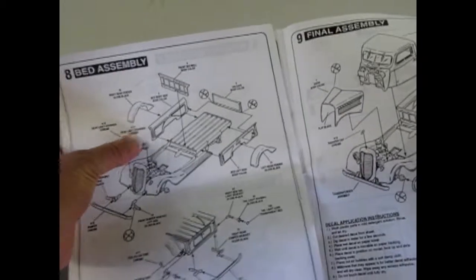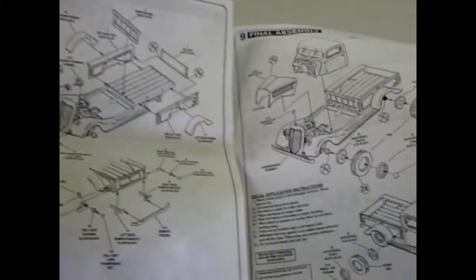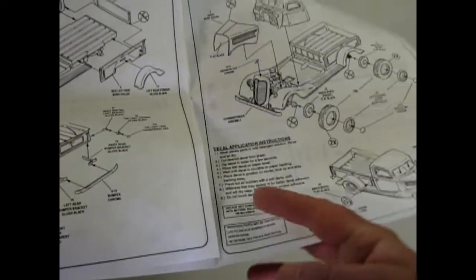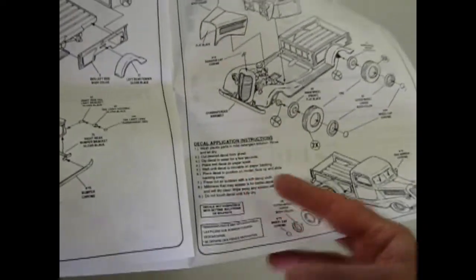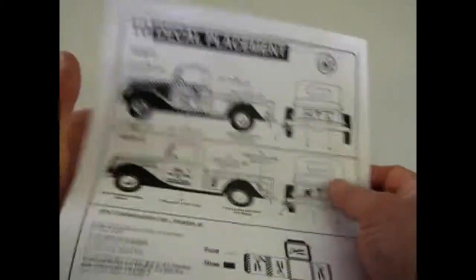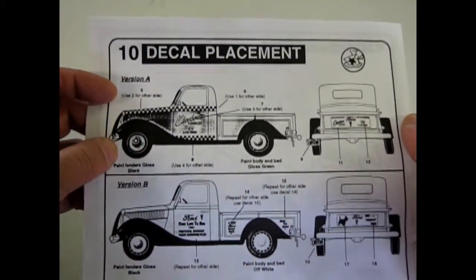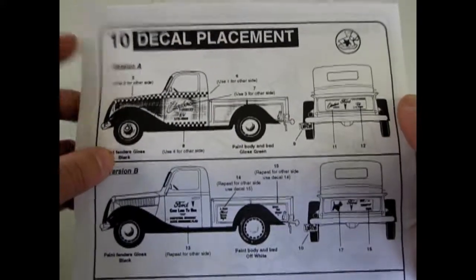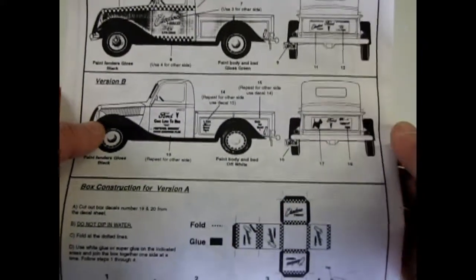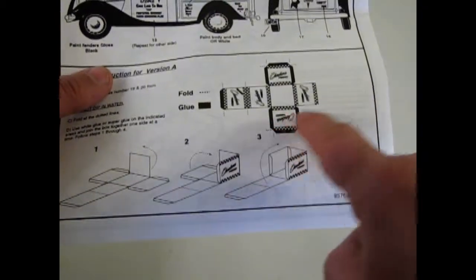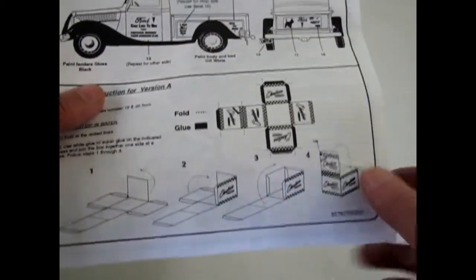And then the pickup bed and the fenders. They also give you a guide as to how to apply your decals on here. And then in the back you get two different options: the Checker Market and a Ford parts truck, as well as these cool little checker boxes for making your pickup bed have something in it.